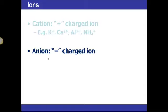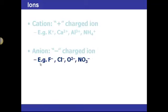We also have anions, which are negatively charged ions. Good examples include fluorine, chlorine, and oxygen, which would gain two electrons to have a negative two charge. You can also have polyatomic anions as well.